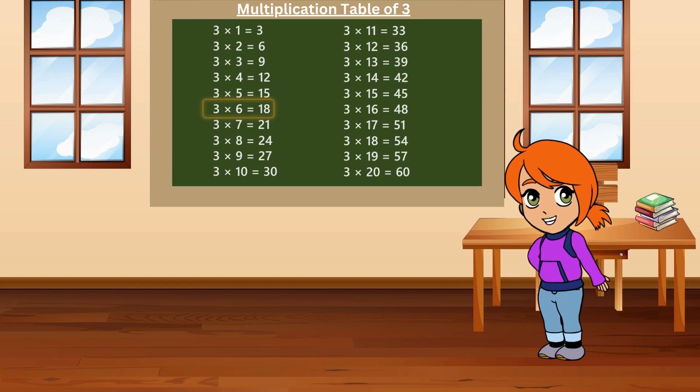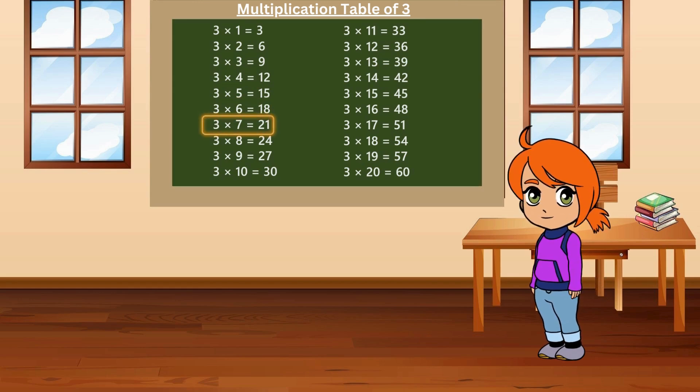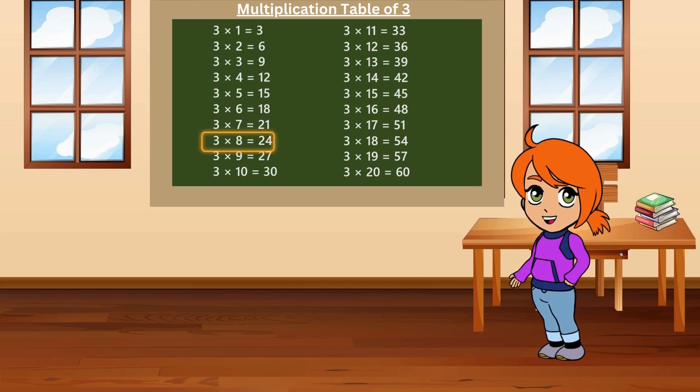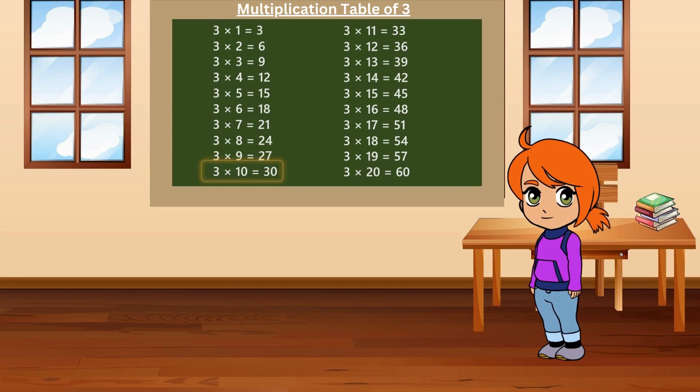Three sixes are eighteen. Three sevens are twenty-one. Three eights are twenty-four. Three nines are twenty-seven. Three tens are thirty.